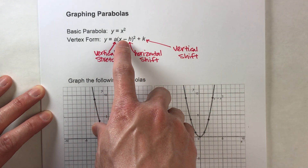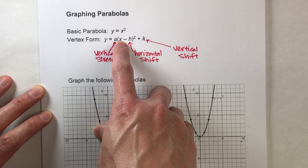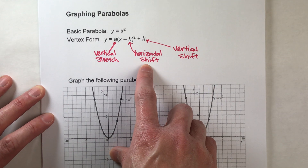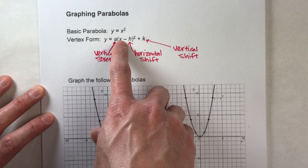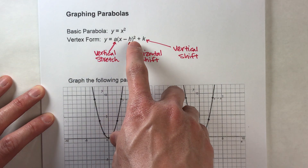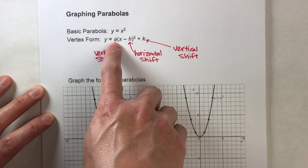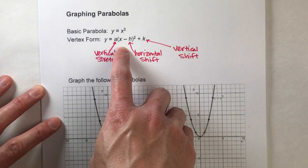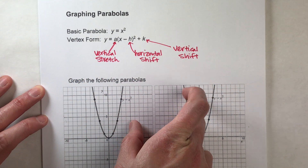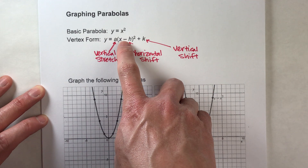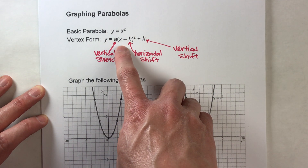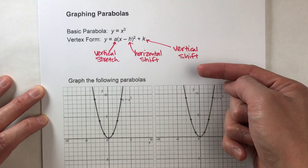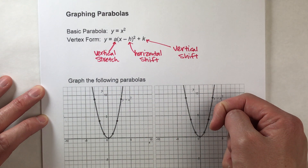Similarly, the number being subtracted from x before it gets squared is the horizontal shift. So if it subtracts h from x before it's squared, it's going to shift it to the right h units. However, if it adds h to x before it's squared, then we're going to shift it to the left h units.